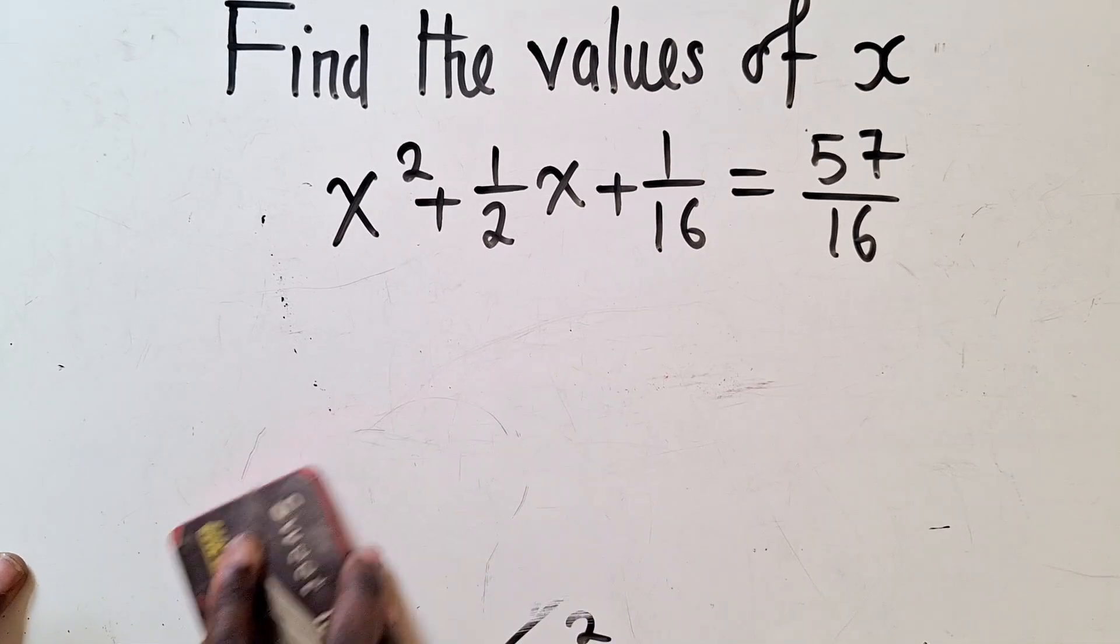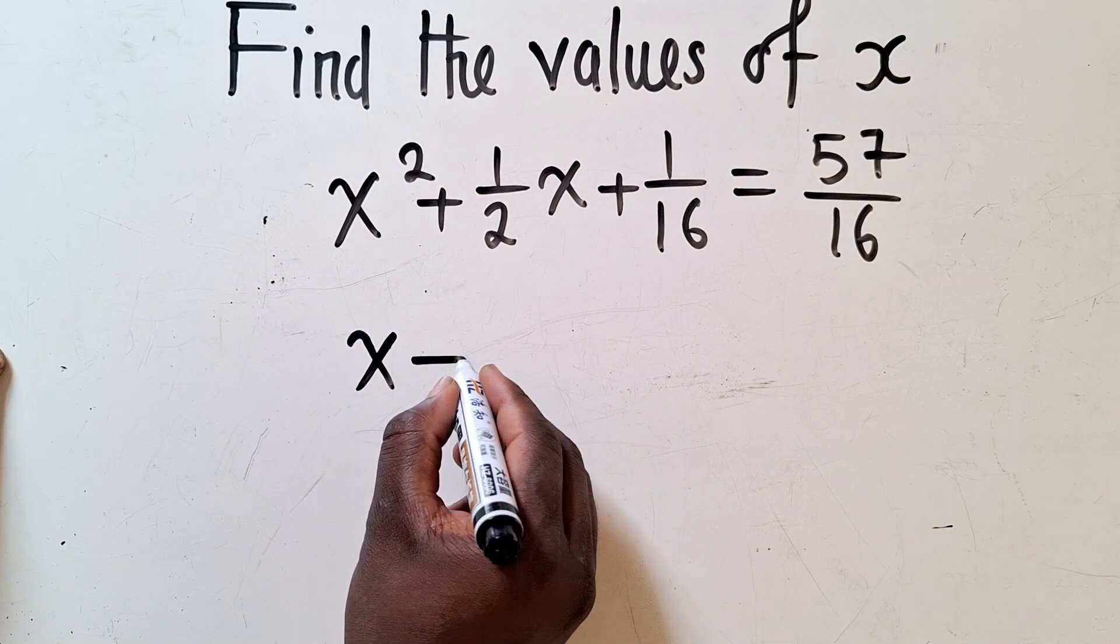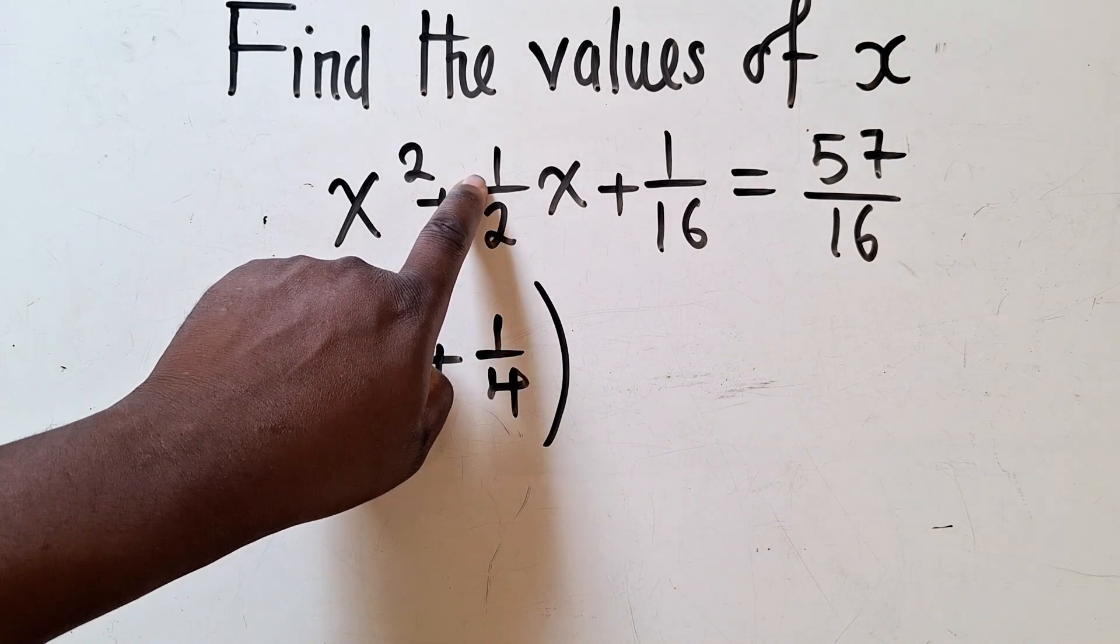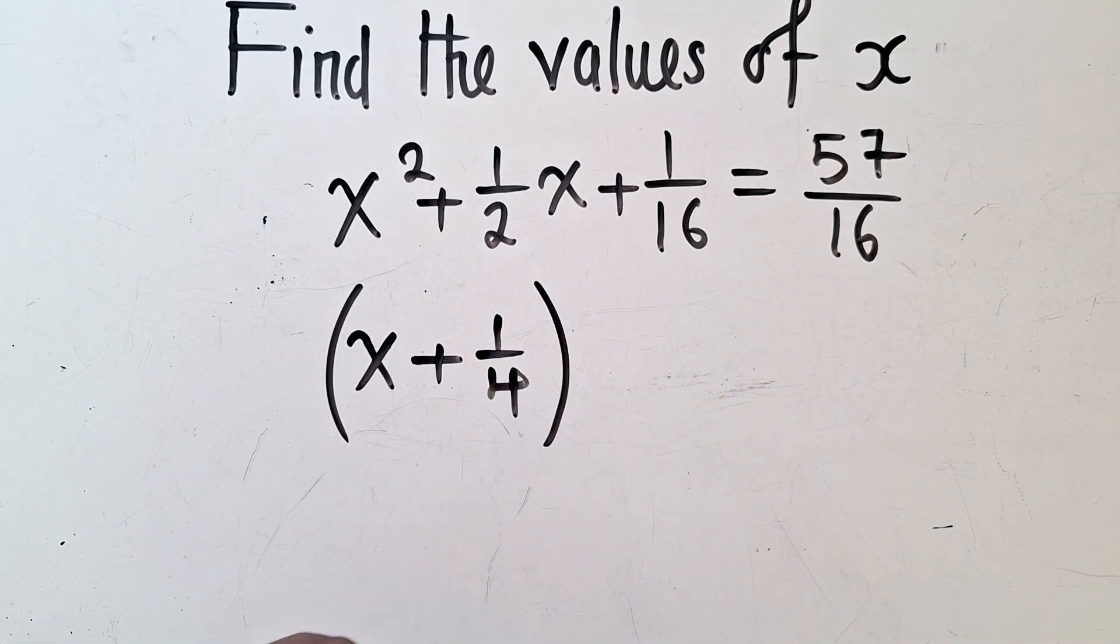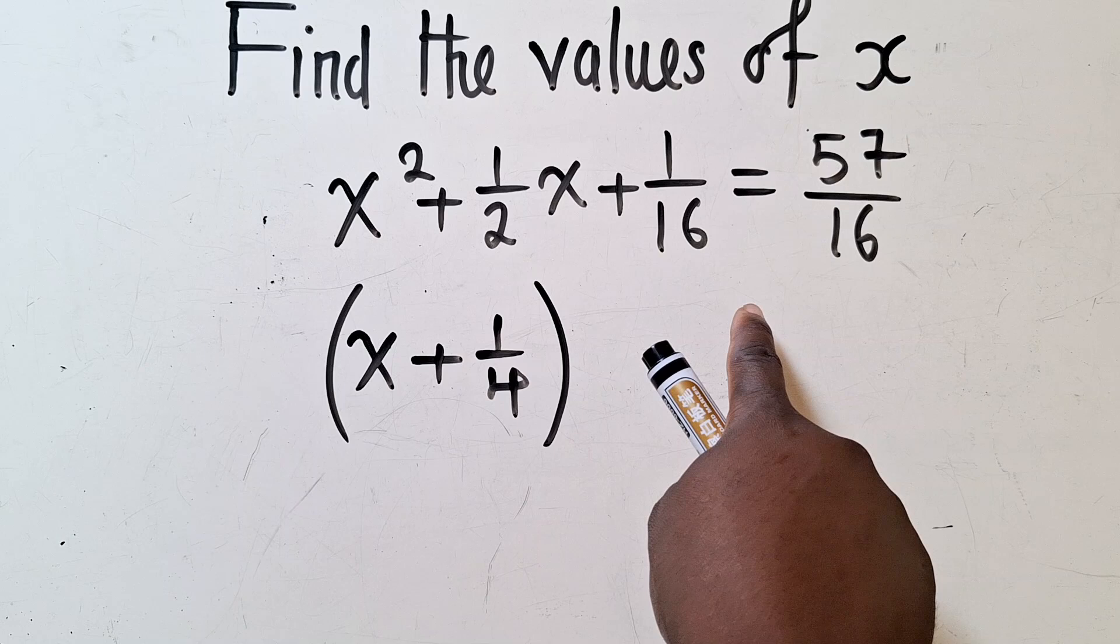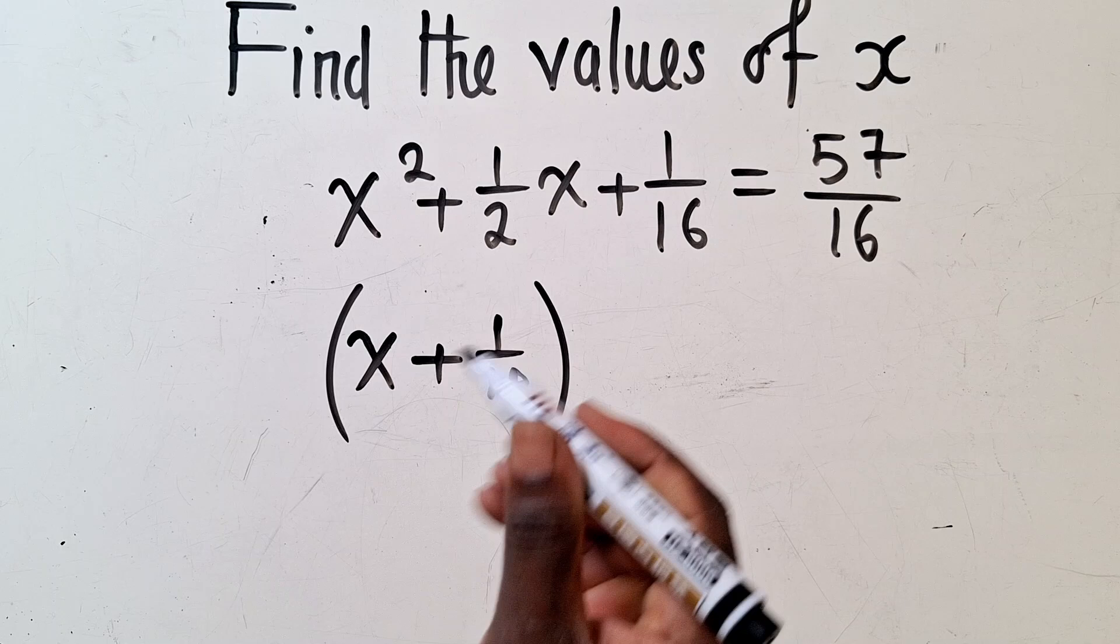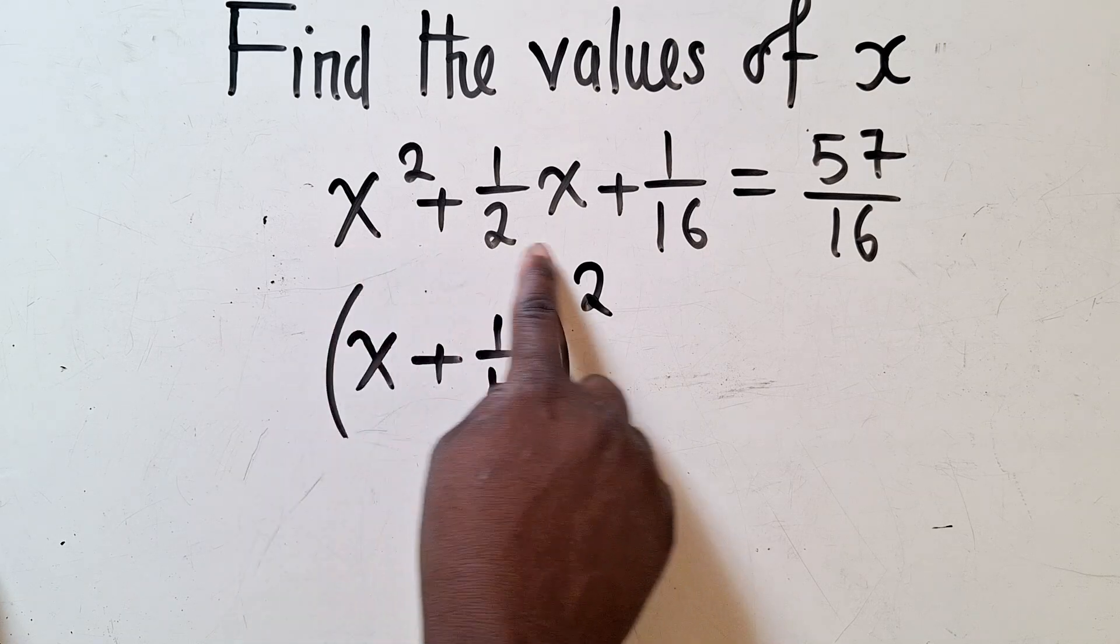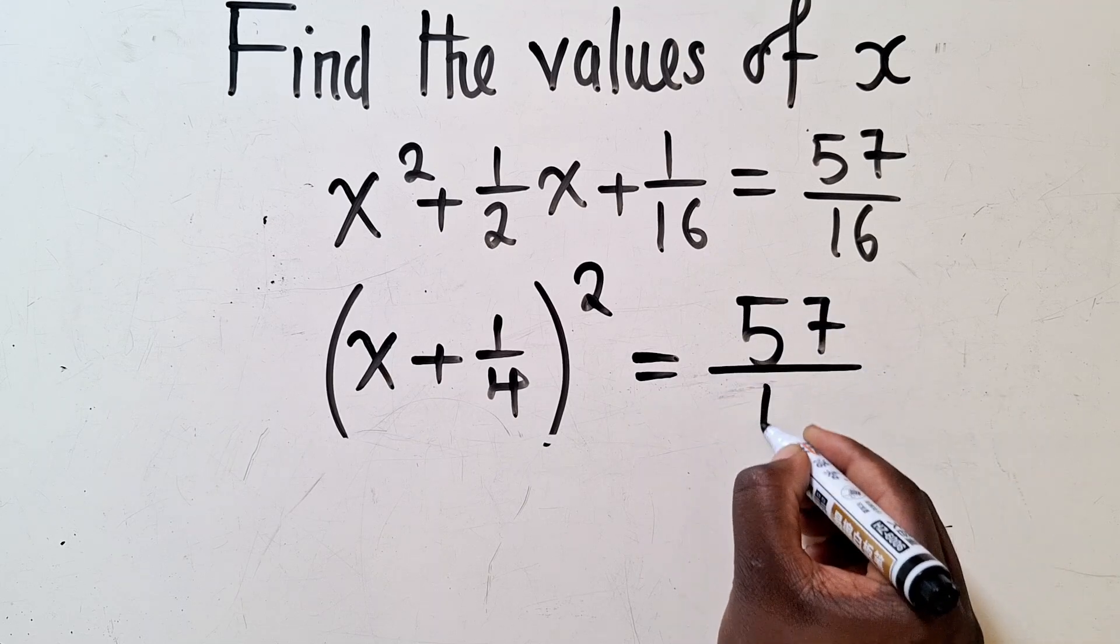And when we do that, we can now write this as x plus 1 over 4. Remember, when we got a b here, we divided it by 2. We got 1 over 4, which we applied a power 2. We raised it to power 2 and it gave us 1 over 16. So that number before we raised it to power 2 is what's supposed to be here, which is 1 over 4. So you just get this and then bring a power 2 here. This is a perfect square. When we multiply this by itself, it will bring us back to this point. And then say equal to 57 over 16.